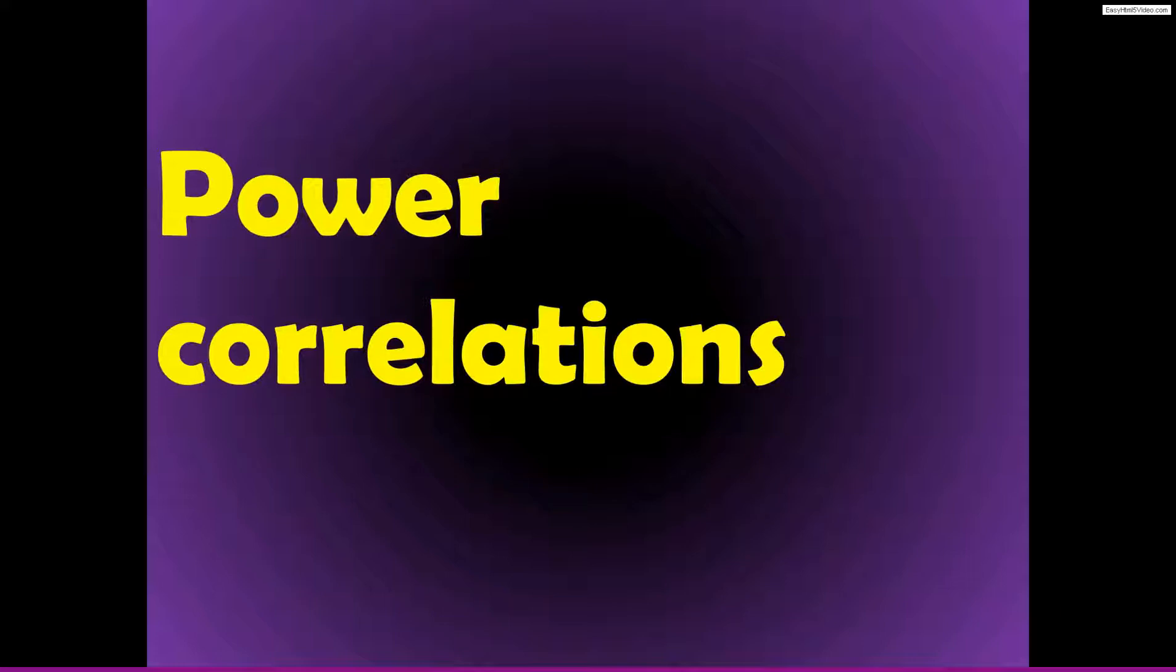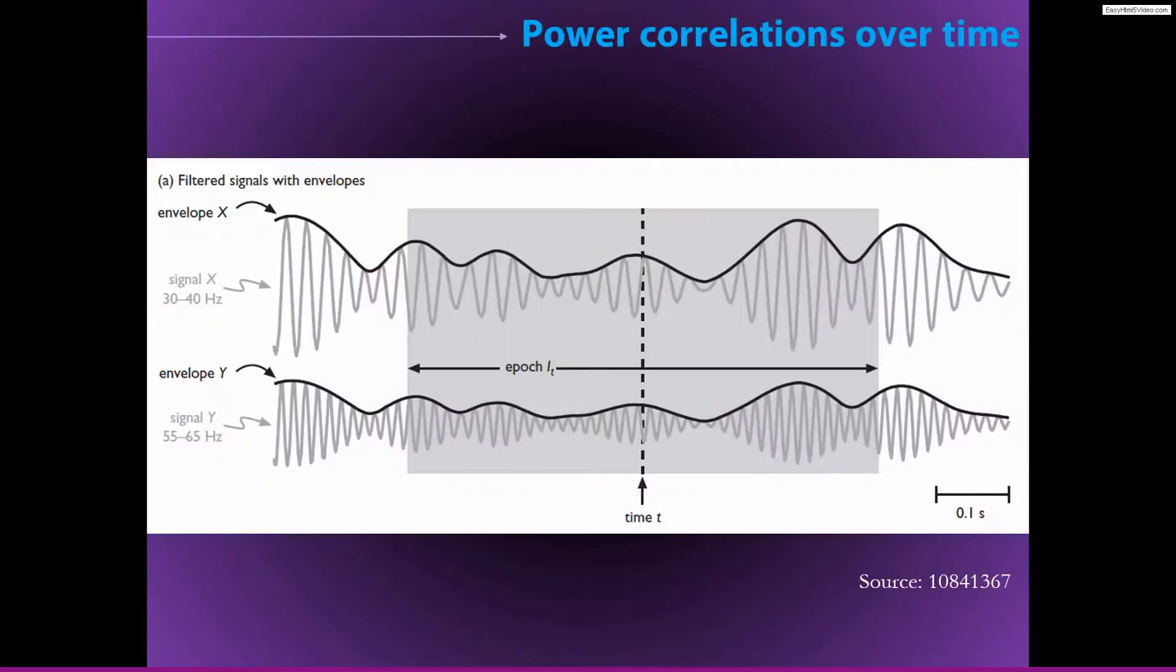And this is fairly simple. You just take the power time series from different electrodes and correlate them. That's actually somewhat of a vague statement because there are several ways that you can take power time series and correlate them. I'm going to introduce you to two of these different methods, one of which we'll go into in a bit more detail in MATLAB.